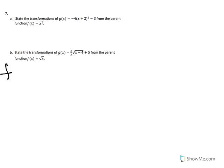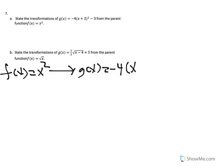So here we have f of x equal to x squared. We want to transform to g of x equal to negative 4 times x plus 2 squared minus 3.